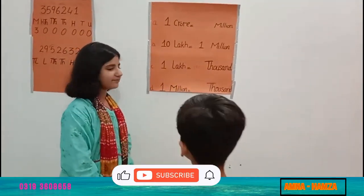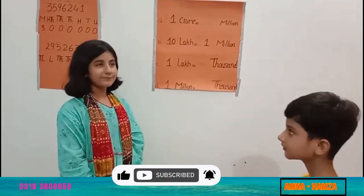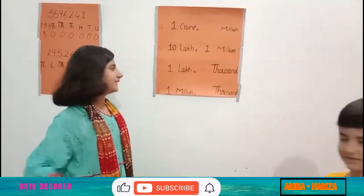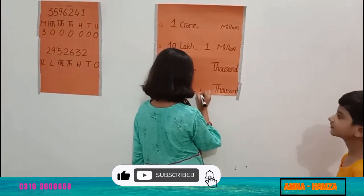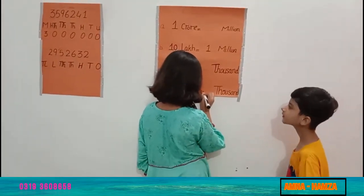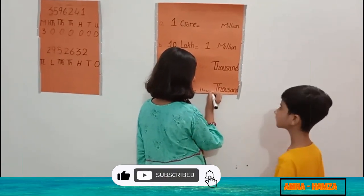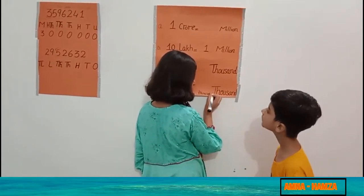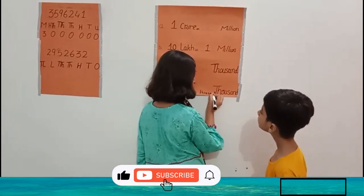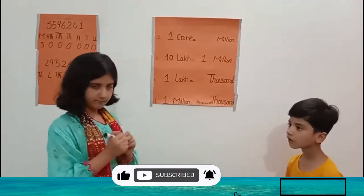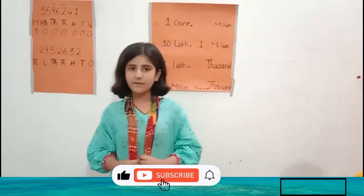1 million equals dash thousand. I hope you all know the place value will be understood.